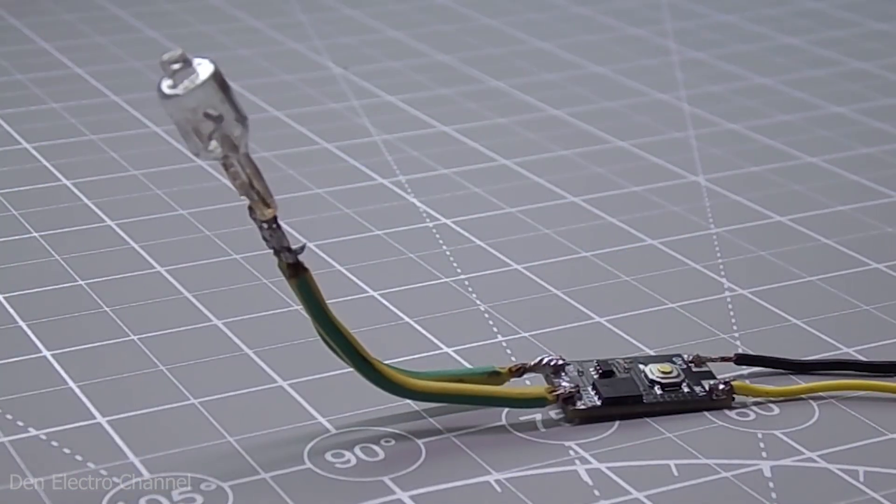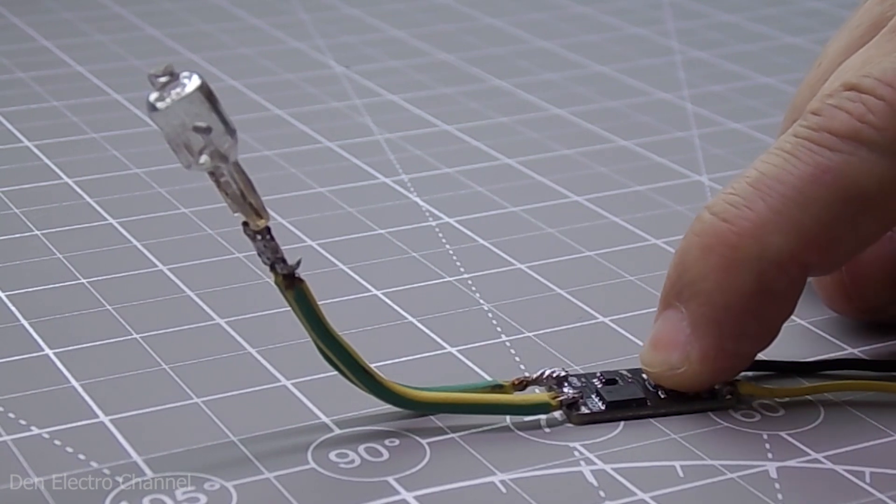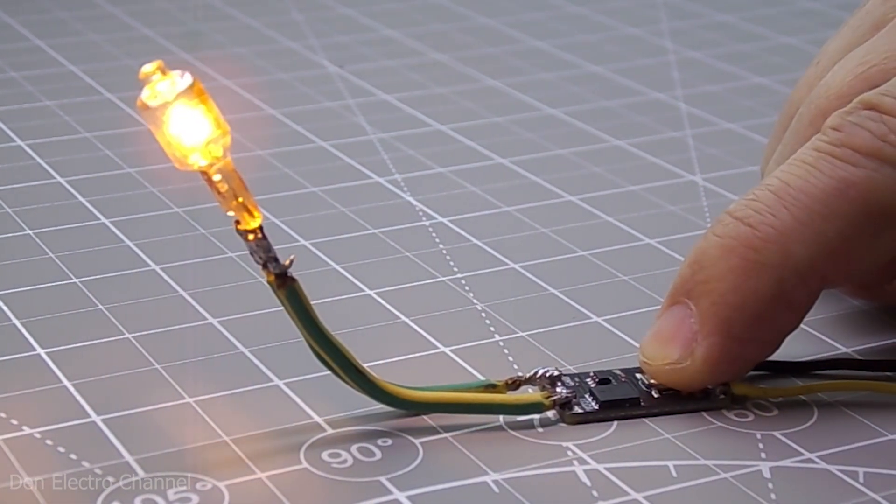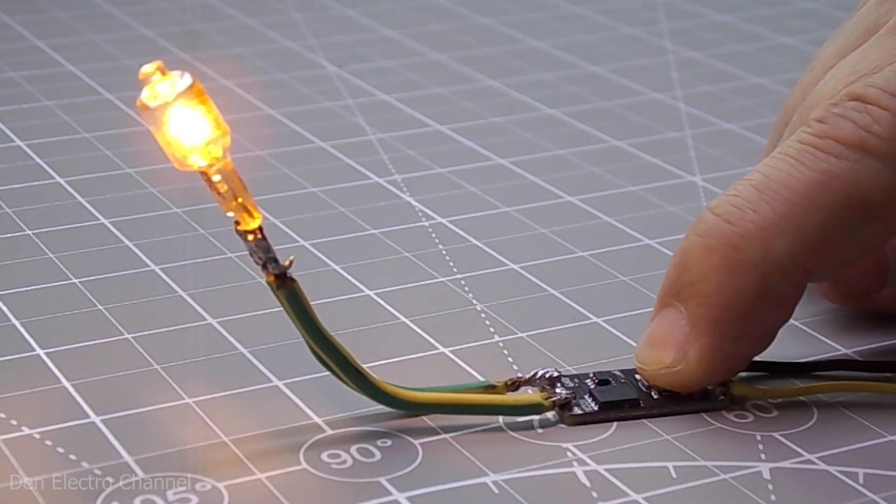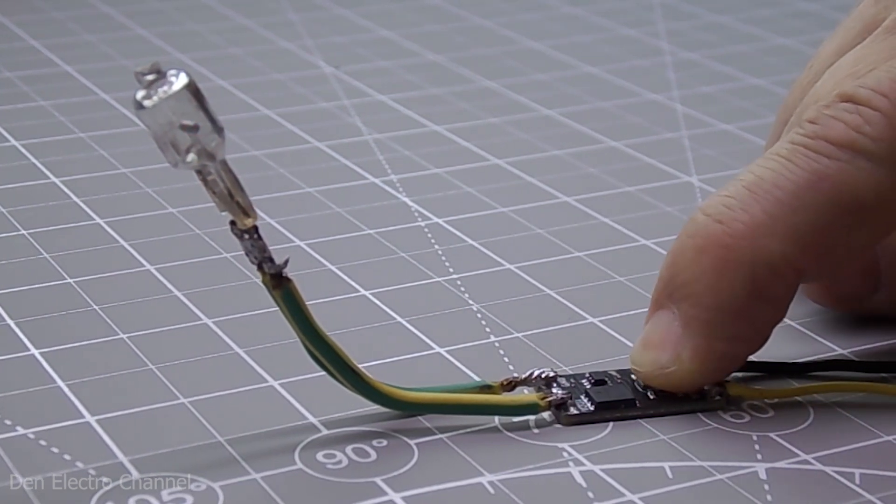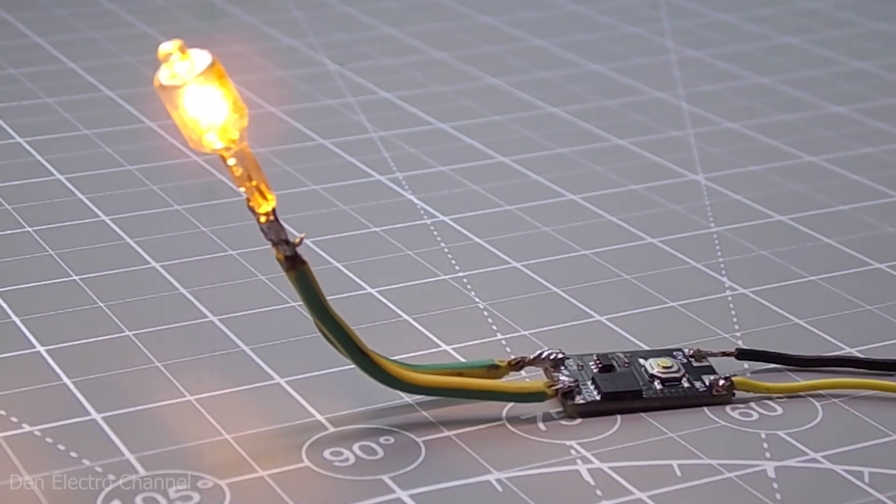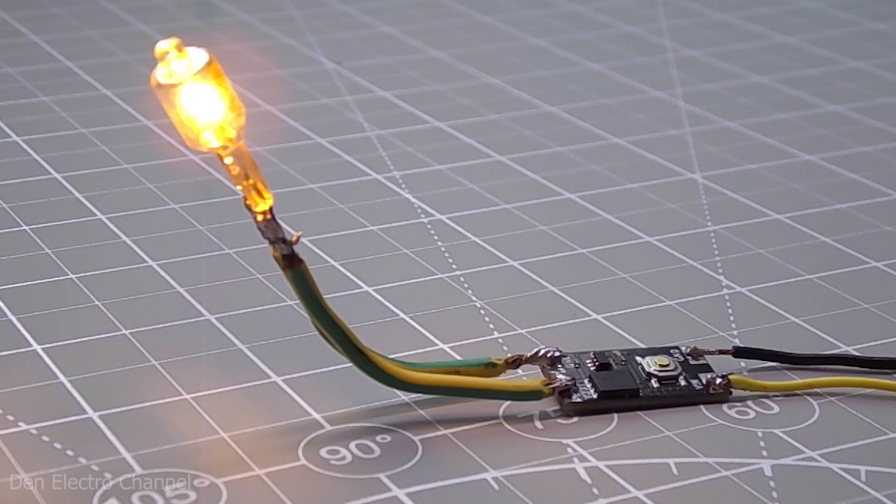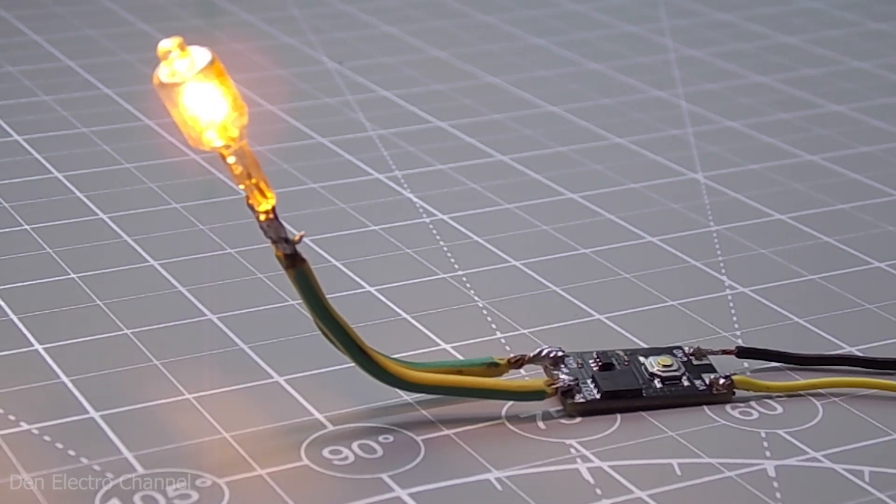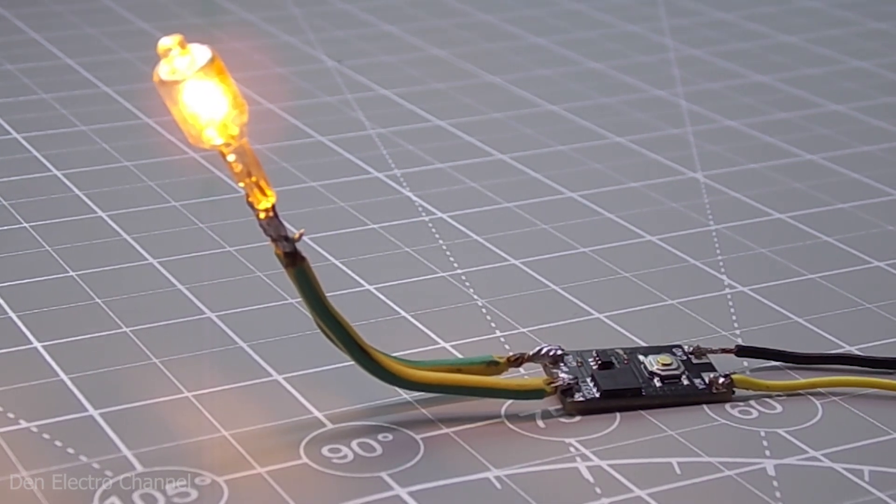If you liked these modules, you can buy them by following the link in the description. Well, if you want to do something similar with your own hands, then you can watch a couple of my videos. In them, I showed how to make one button and two button electronic switches. Links are also in the description.